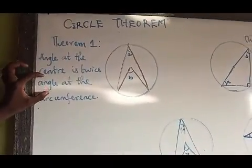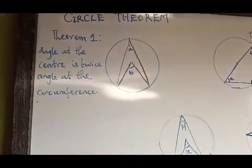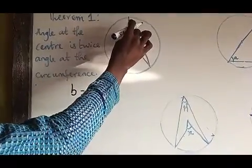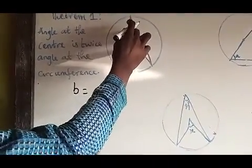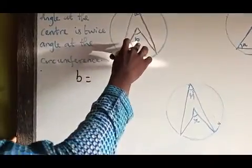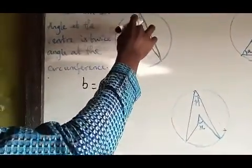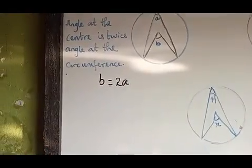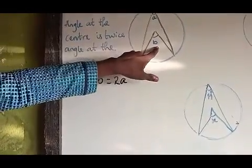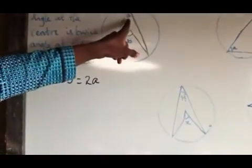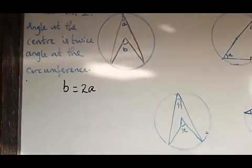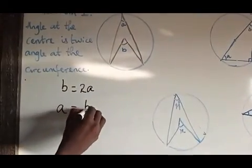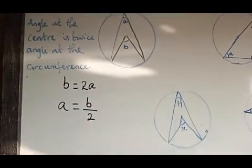So if the angle at the center is B, it is twice the angle at the circumference. That means the angle at the circumference A would be B divided by 2.